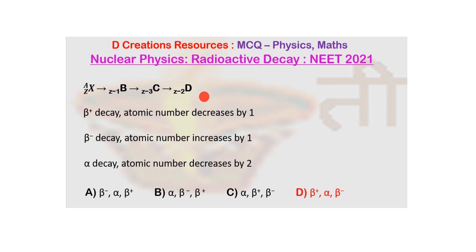And in the last case, from Z minus 3(C) it is going to Z minus 2(D), that means atomic number has increased by 1. So it has to be beta minus. So the sequence is beta plus, alpha, beta minus, and you can see that option D represents this particular answer. Thank you.